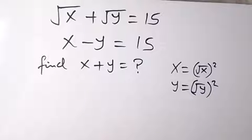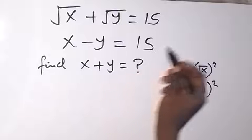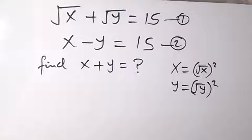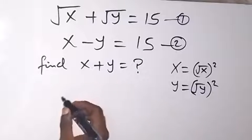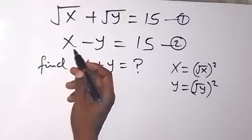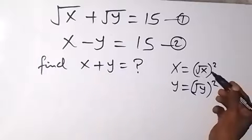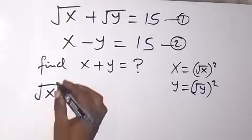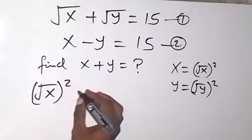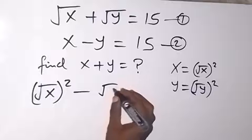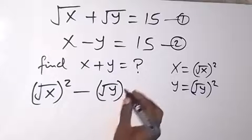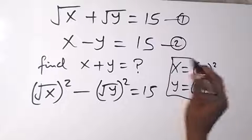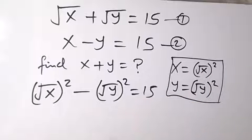So from there, we can now rewrite — let's label this as equation 1 and this as equation 2. Then we can rewrite equation 2 and say, instead of writing x minus y, we can write it in terms of root x squared minus root y squared, which is equal to 15. So we have written equation 2 again now.